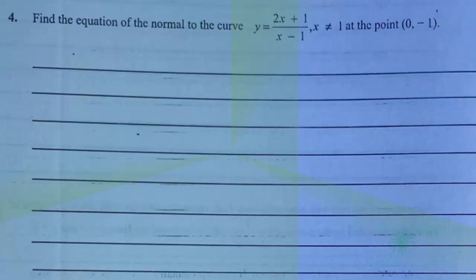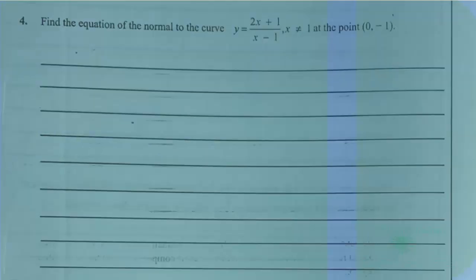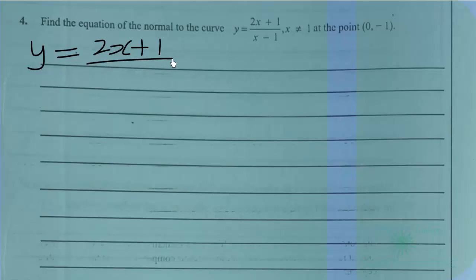Find the equation of the normal to the curve y = (2x+1)/(x-1), where x is not equal to 1, at the point (0, -1). The given equation is y = (2x+1)/(x-1).